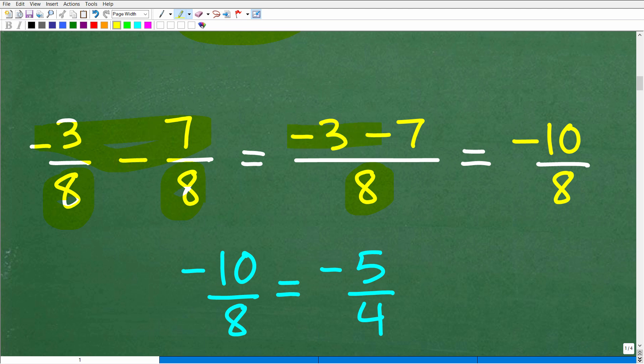So we're just going to simply subtract the numerator, so that'll be negative 3 minus 7. So that's going to be our numerator, so negative 3 minus 7 is negative 10. That's going to be negative 10 over 8. And of course, negative 10 over 8 we can reduce to the fraction negative 5 over 4.